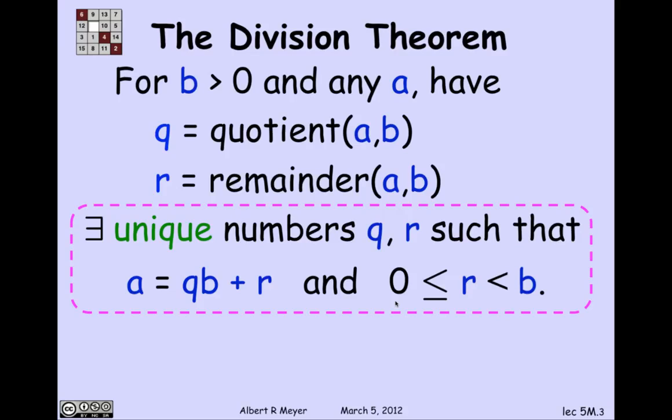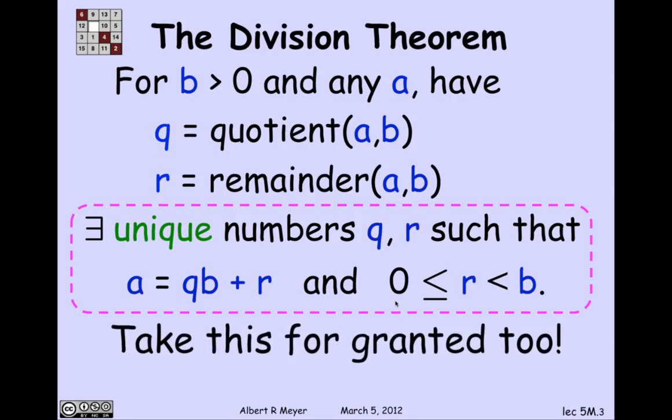And in fact, there's a unique quotient of A divided by B and this unique remainder of A divided by B, where the remainder, what makes it unique is the remainder is constrained to be in the interval greater than or equal to 0 and less than the divisor B.